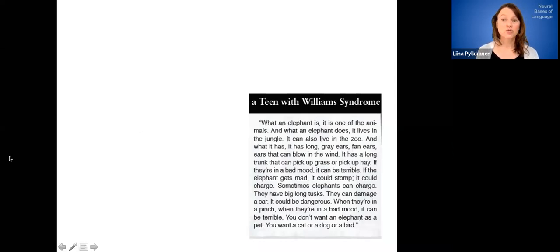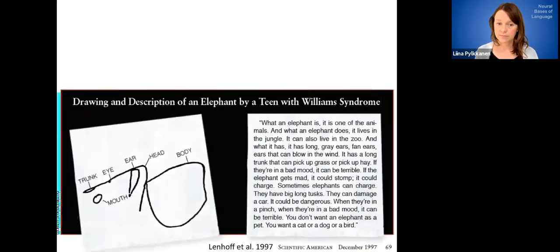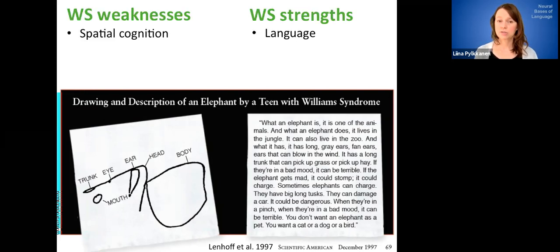The same teen's drawing of an elephant looks like this. Okay, so now unless you knew that that was supposed to be an elephant, you probably wouldn't be able to categorize it as an elephant. You wouldn't know that that's a description of an elephant. And so one of the really striking dissociations in Williams Syndrome is the dissociation between their spatial cognition and language. So those are really, really, really different in a remarkable way.